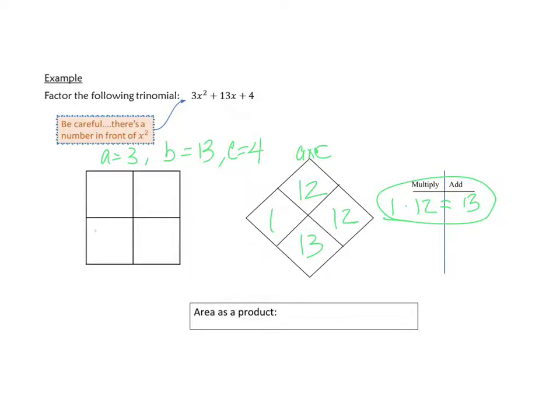I could have already put my 3x squared right here and my 4 up here, because now all I need to do is add a 1x and a 12x. I'll start with an x. x times what equals 3x squared? Well, x times 3x equals 3x squared. x times what equals 12x? If you said 4, you're right. x times what equals 1x? x times 1. So, our final answer is 3x plus 1 times x plus 4.